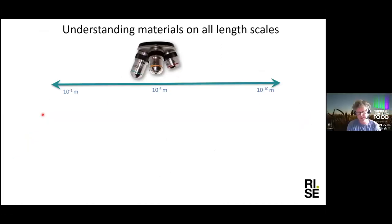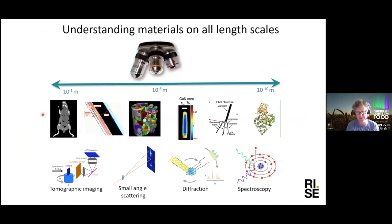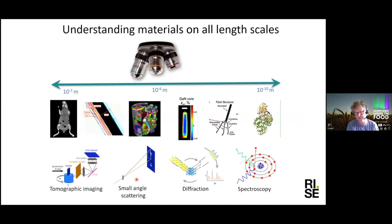Our X-ray and neutron techniques are about understanding structures and properties at different length scales, spanning from millimeters and centimeters down to the Ångström level. We could have different categories like tomography, scattering techniques, diffraction techniques, and spectroscopy techniques — all of which can contribute to understanding our food material.